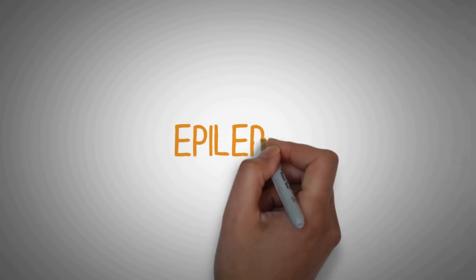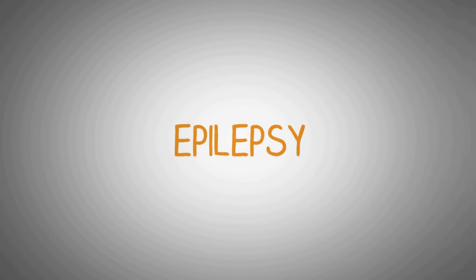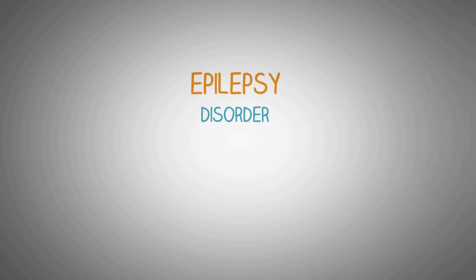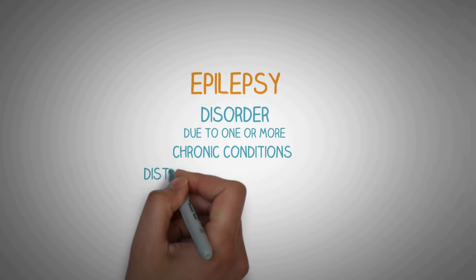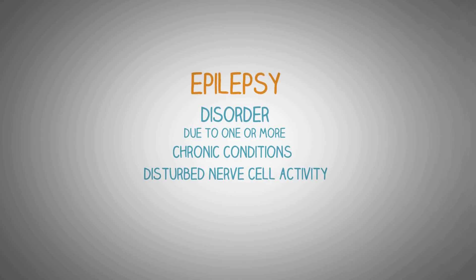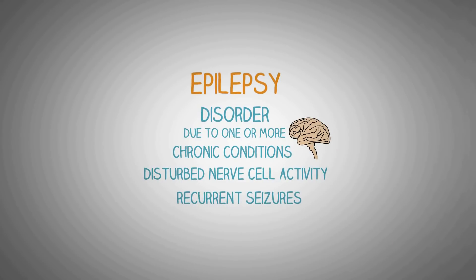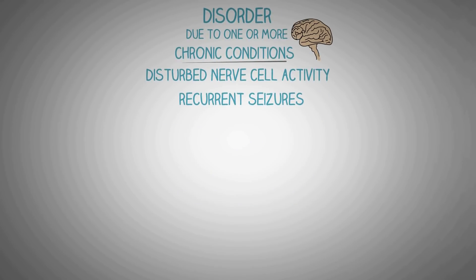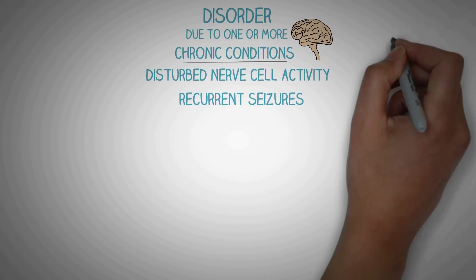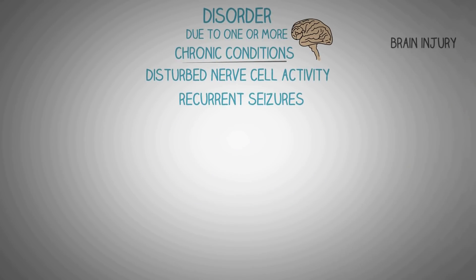In this video, we will study about epilepsy. Epilepsy is a disorder which occurs due to one or more chronic conditions of the body in which there occurs disturbed nerve cell activity in the brain. This leads to recurrent seizures in the person. It occurs due to one or more chronic conditions like brain injury after a road traffic accident, which leads to disturbed and uncontrolled nerve cell activity in the brain.